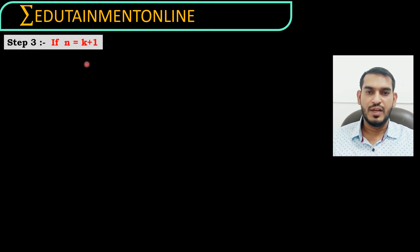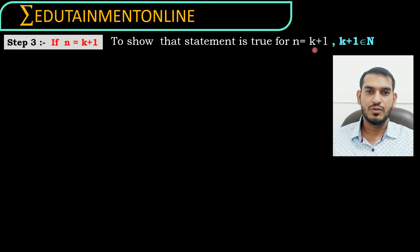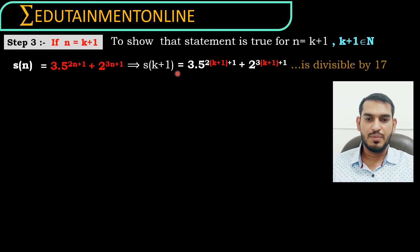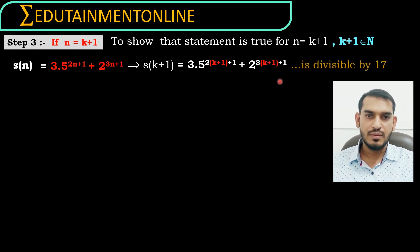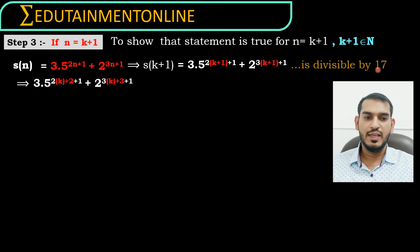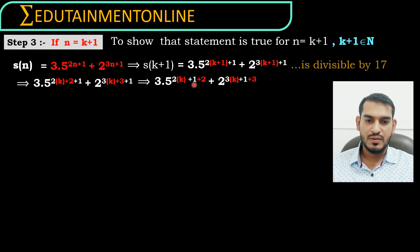Now in the third step we have to prove that the statement is true for n equals k plus 1. S of n is 3 into 5 power 2n plus 1 plus 2 power 3n plus 1. So s of k plus 1 will be 3 into 5 power 2 into k plus 1 plus 1, plus 2 power 3 into k plus 1 plus 1. We have to prove that this statement is divisible by 17. This can be written as 3 into 5 power 2k plus 1 plus 2.